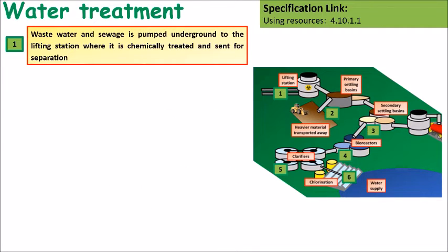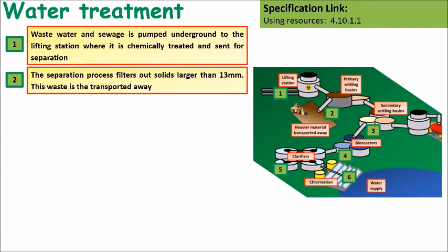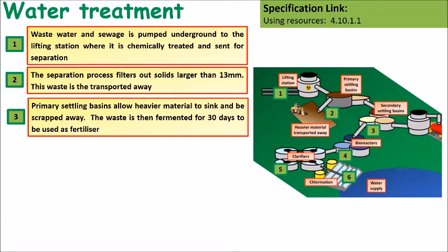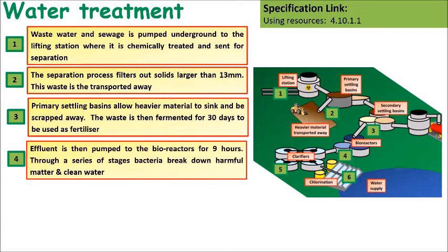Wastewater and sewage is pumped underground to a lifting station where it is chemically treated and then sent for separation. The separation process filters out solids larger than 30 millimetres, which are transported away. Primary settling basins allow heavy materials to sink to the bottom and be scraped away — much of this can be used as fertilizer on farms. The effluent is then pumped into bioreactors for nine hours, where a series of reactors break down bacteria and other harmful matter.